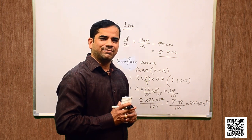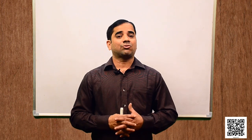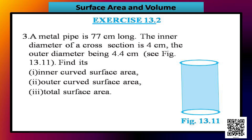Hope you understand the solution. Students, let us now solve question number 3. A metal pipe is 77 centimeter long. The inner diameter of a cross section is 4 centimeter and the outer diameter is 4.4 centimeter. Find its inner curved surface area, outer curved surface area, and total surface area.